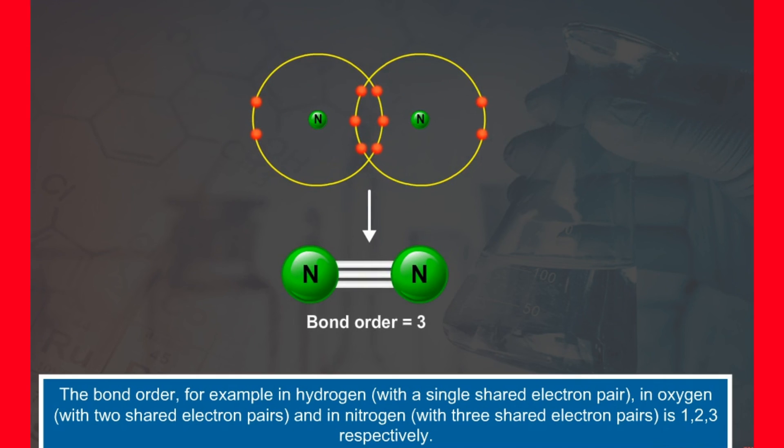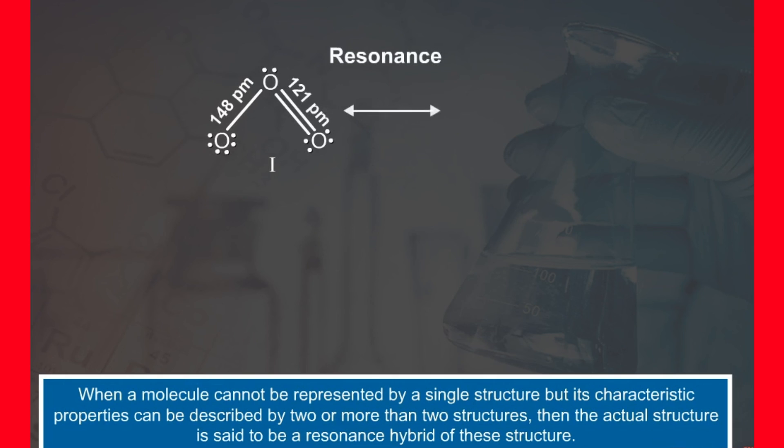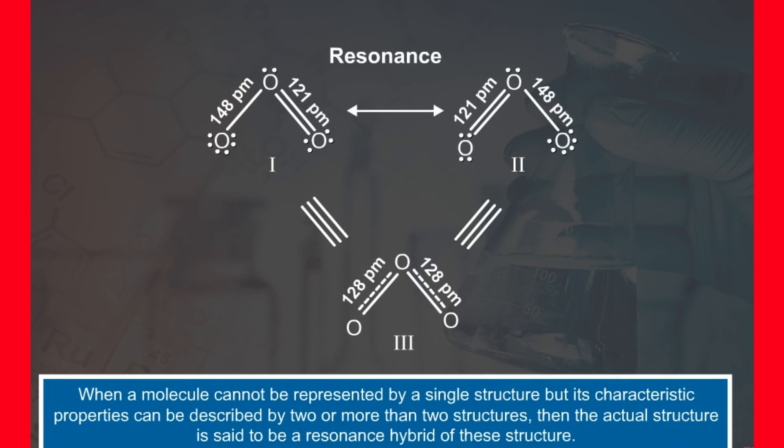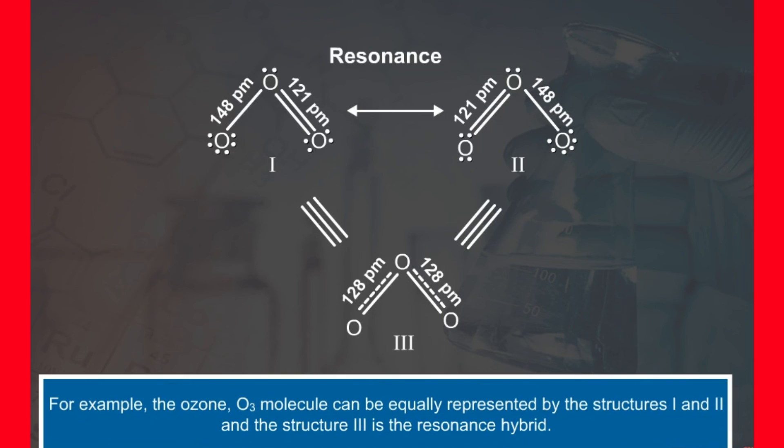A general correlation useful for understanding the stabilities of molecules is that, with increase in bond order, bond enthalpy increases and bond length decreases. When a molecule cannot be represented by a single structure, but its characteristic properties can be described by two or more than two structures, then the actual structure is said to be a resonance hybrid of these structures. For example, the ozone molecule can be equally represented by the structures 1 and 2, and the structure 3 is the resonance hybrid.